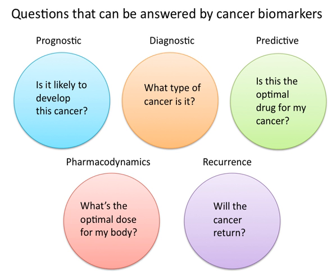Another promising area of biomarker application is surrogate endpoints. In this application, biomarkers act as stand-ins for the effects of a drug on cancer progression and survival. Ideally, validated biomarkers would prevent patients from undergoing tumor biopsies and lengthy clinical trials to determine if a new drug worked. Successful biomarker surrogates could save substantial time, effort, and money if failing drugs could be eliminated from the development pipeline before being brought to clinical trials.